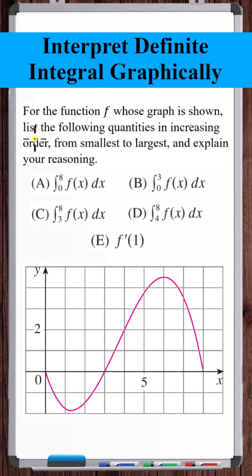For the function f whose graph is shown, list the following quantities in increasing order. Well, f prime of 1 — if we come to x equals 1, this is going to be negative.